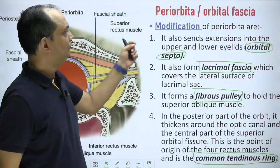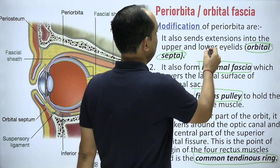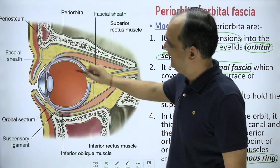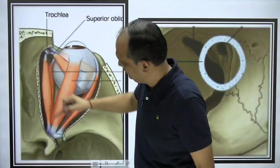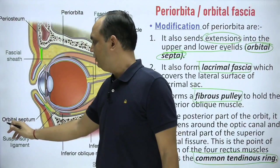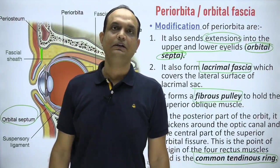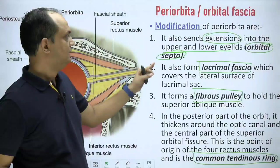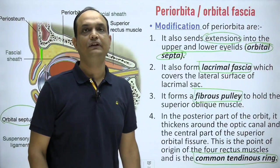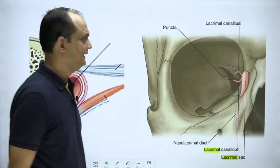The orbital septum is a modification where the periosteum sends extensions into the upper and lower eyelids. So the orbital septum is an extension of the periosteum into the upper and lower eyelids. The second modification is the lacrimal fascia, which covers the lateral surface of the lacrimal sac. In this diagram, you can see the lacrimal sac, which is part of the lacrimal apparatus.